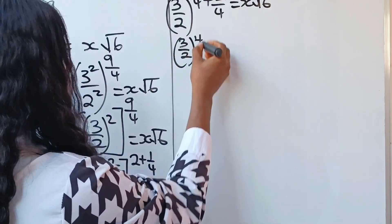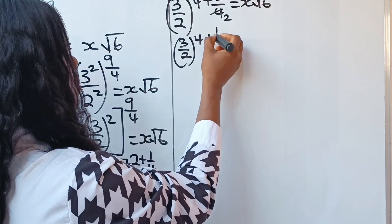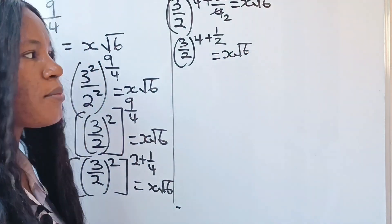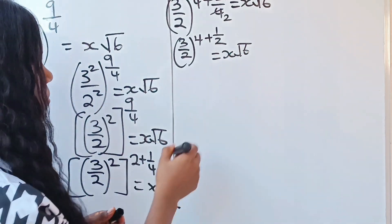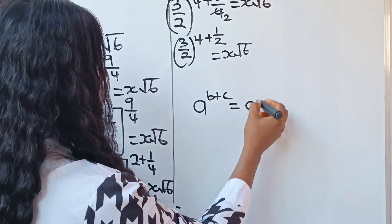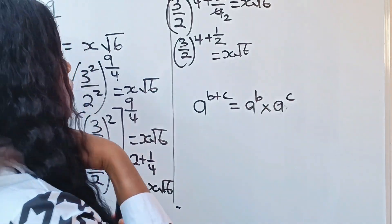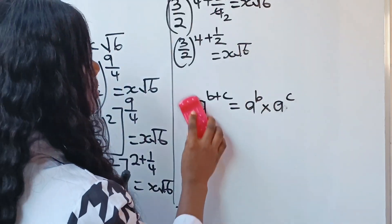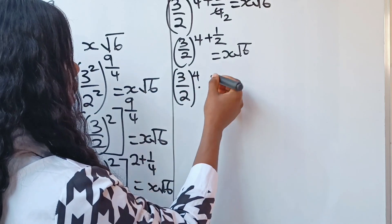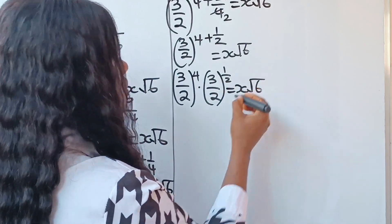We can write this as (3/2) raised to the power of 4 plus 1/2, equal to x root 6. Recall that a to the power of b plus c is the same as a to the power of b times a to the power of c, using the law of indices. So we can write the left hand side as (3/2) to the power of 4 multiplied by (3/2) to the power of 1/2, equal to x root 6.